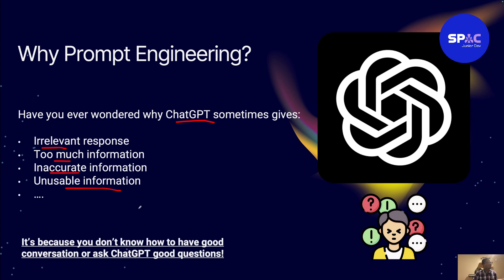Sometimes the information might not be usable. Why does that happen? The reason is because you don't know how to have a good conversation with AI or how to ask good questions. Imagine you're in a class and you want to ask your teacher a question but you don't know how to craft it. If you don't know how to ask someone a question well — whether your parents or a friend — you won't get a good response. It's the same with AI.